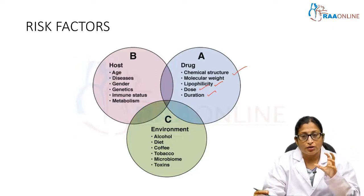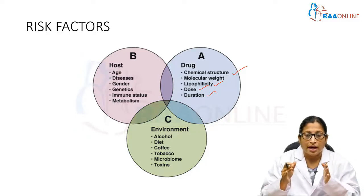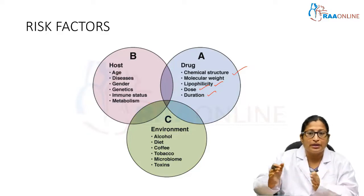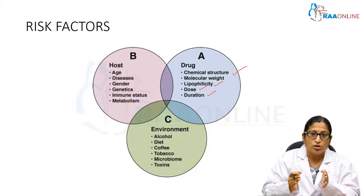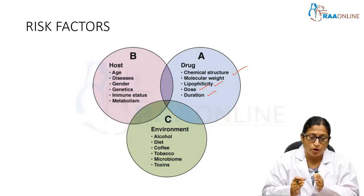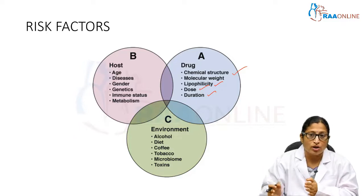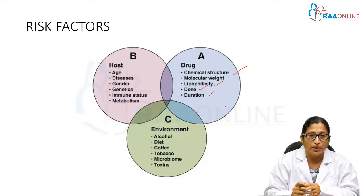Certain drugs are known to be hepatotoxic — for example, rifampicin, pyrazinamide, INH, and paracetamol — but at particular doses. Paracetamol at a particular dose is toxic to the liver; therapeutic dose and toxic dose are two different entities. The duration of consumption also matters, as certain drugs taken on a long-term basis can cause hepatotoxicity. All these histories should be obtained from the patient.